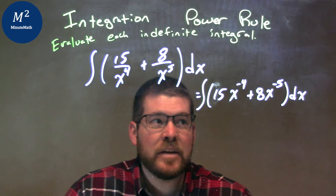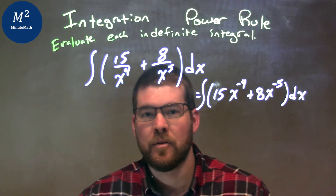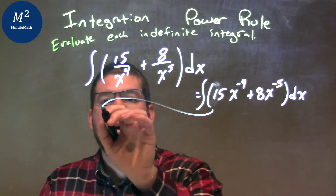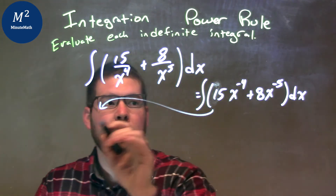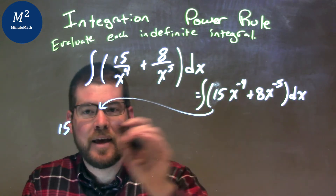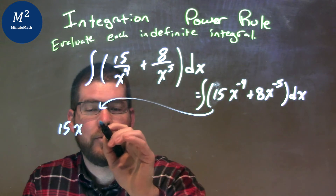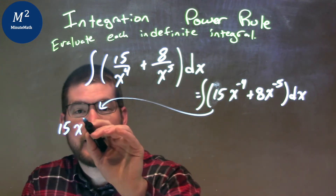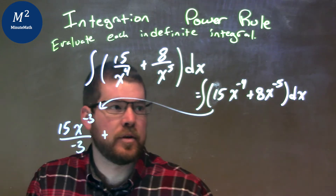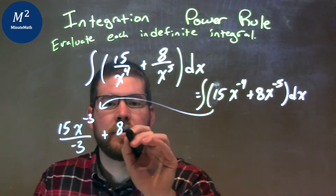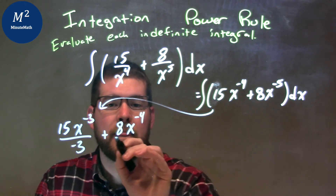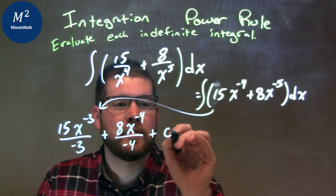Now let's take that integral. Keep the constant out front — 15 — and take the exponent and add 1 to it: negative 4 plus 1 is negative 3, and we divide by that exponent, negative 3. Plus 8x — add 1 to the exponent, so we have negative 4 now — and divide by negative 4 as well, and plus C.